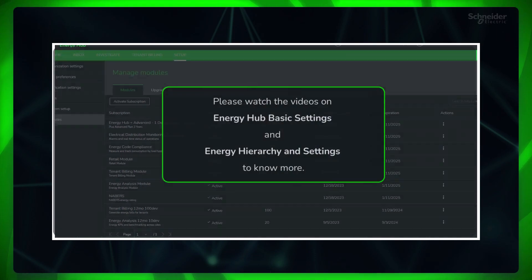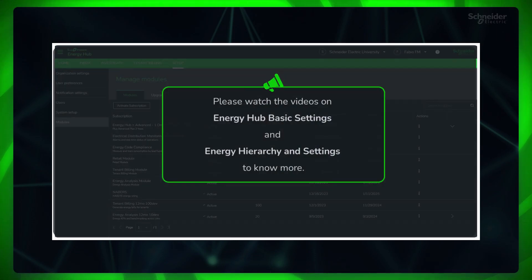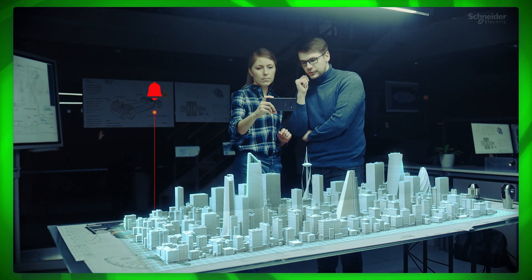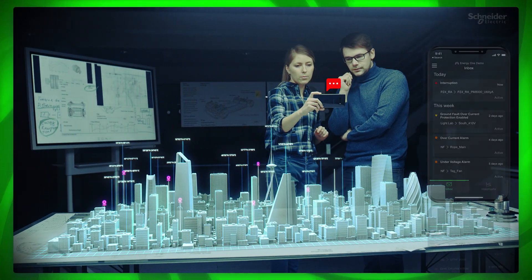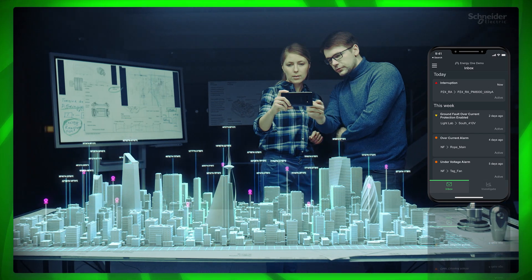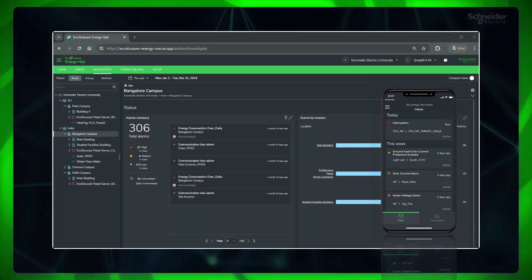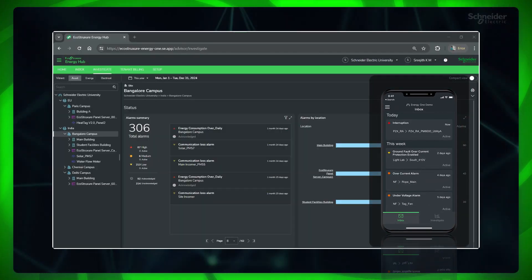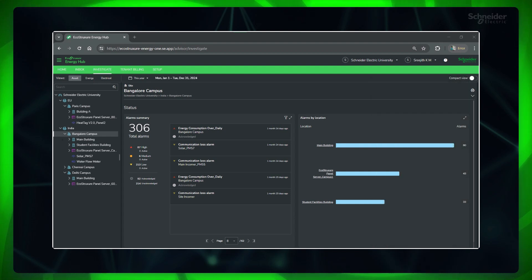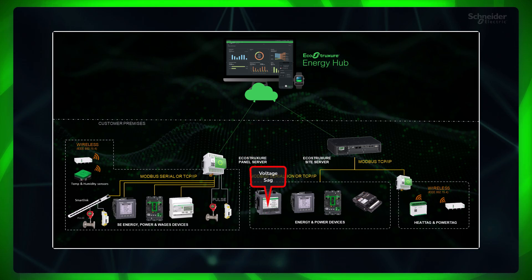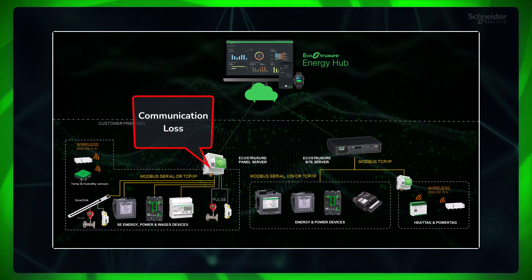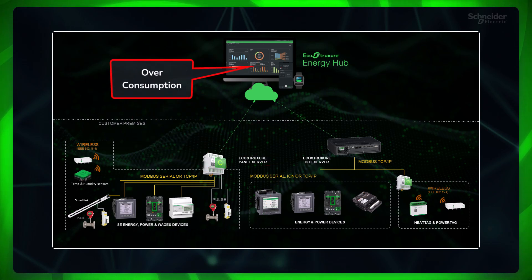Please watch the videos on Energy Hub basic settings and energy hierarchy and settings to know more. Alarms help us to stay informed or notified about any exceptional operating conditions in your site or organization. It could be a measurement exceeding a defined value or a disruption in normal operating conditions. An alarm can be raised by a monitoring device, a communication gateway, or the Energy Hub software.